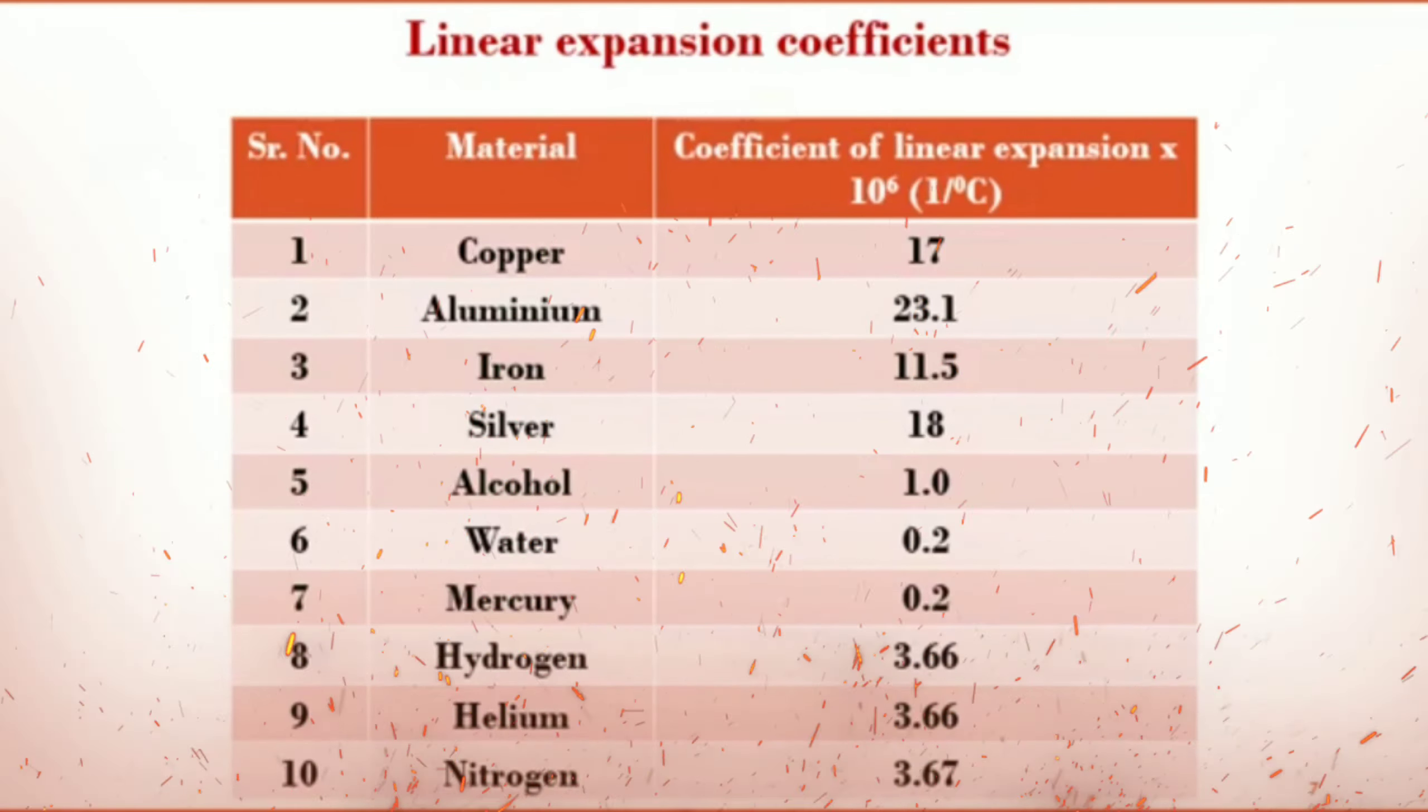The expansion coefficients of some substances are given in the following table. First is copper, coefficient of linear expansion is 17. Liquid alcohol, coefficient is 1.0. Gas hydrogen, 3.66. Similarly, aluminum 23.1, water 0.2, helium 3.66, iron 11.5, mercury 0.2, nitrogen 3.66, silver 18, chloroform 1.3, and sulfur dioxide 3.90.